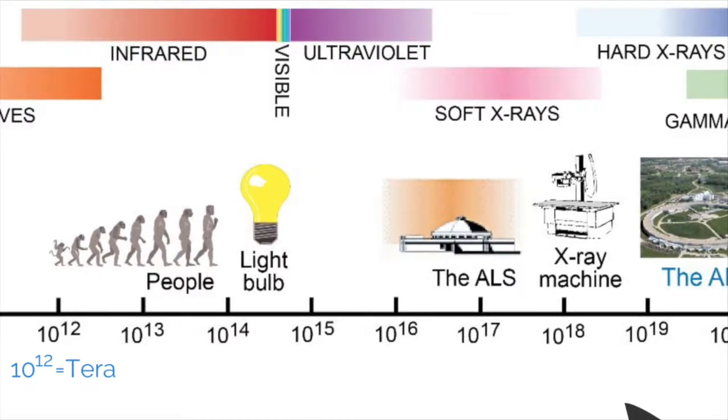After violet comes ultraviolet light, which has a frequency of about 1,000 terahertz. At these frequencies, electromagnetic radiation becomes dangerous to humans. Ultraviolet radiation can damage skin to the point of causing its cells to mutate into cancer cells.